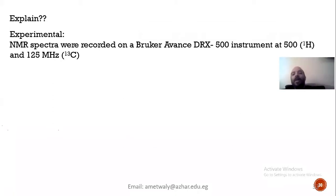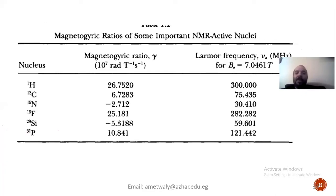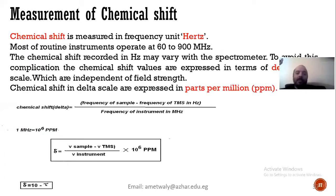That is why when we write our papers in the experimental section, we write: the NMR spectra were recorded on a Bruker Advance instrument at 500 MHz for proton and 125 MHz for carbon. If the apparatus is 400 MHz, it would be 400 for proton but only 100 for carbon-13. These are examples for gyromagnetic ratio.